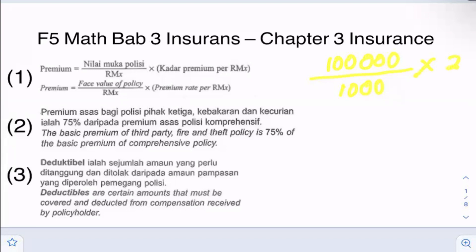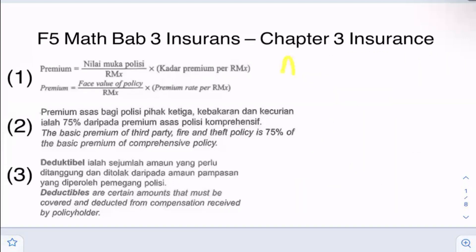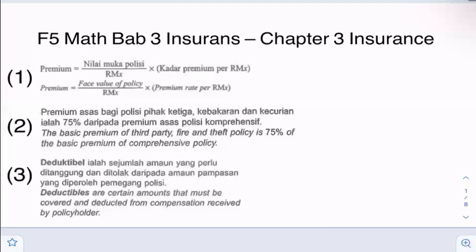So let's say the rate is RM2 per RM1,000. To calculate the premium, it will be 100 multiplied by 2, giving RM200. Bear in mind, this RM200 is the annual premium. So if the question asks about the monthly premium, it will be RM200 divided by 12. Remember, this equation is for an annual premium.